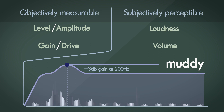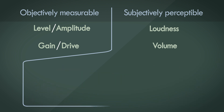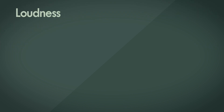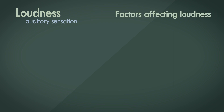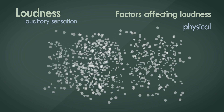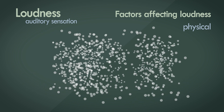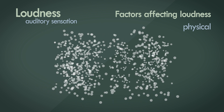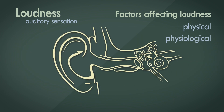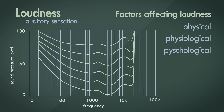Loudness and volume are subjective attributes of audio. Loudness can be thought of as an auditory sensation, where sounds can be ordered on a scale from quiet to loud. It doesn't just depend on physical factors such as the intensity of the pressure waves reaching your ears, but also on physiological factors like how your ears are designed and the natural resonance produced within the boundary of the ear. Even psychological factors like how your brain colours the perception of loudness for different frequencies matter as well.